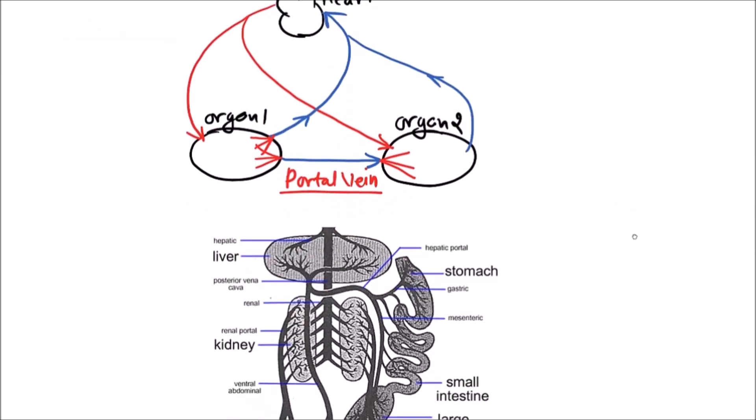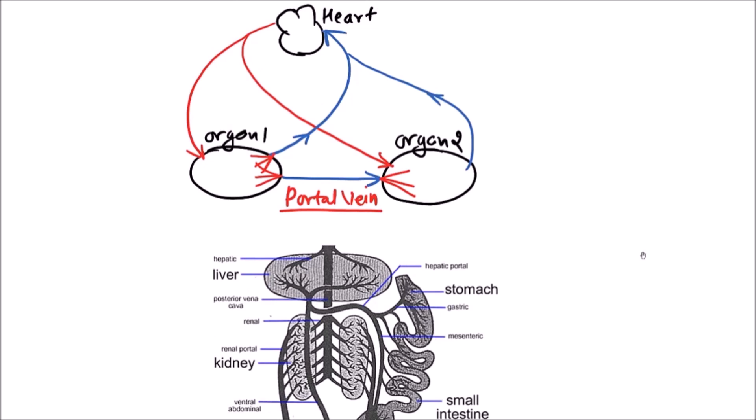The naming of a portal vein is also different. A typical vein is named after the organ which it is draining — for example, the hepatic vein drains the liver, so it starts from the liver. But a portal vein is named after the organ on which it is ending. For example, the hepatic portal vein ends on the liver rather than starting from it.